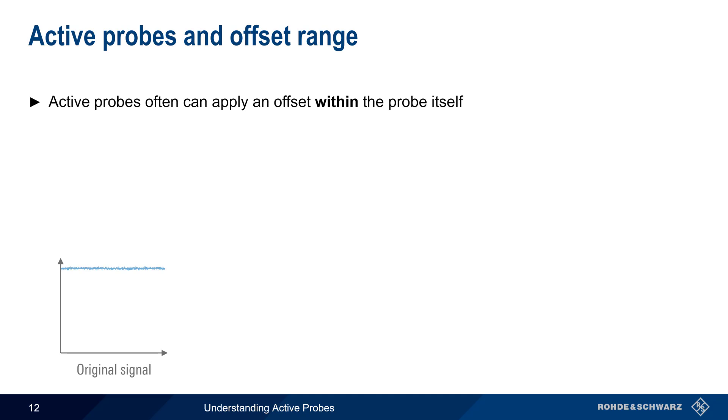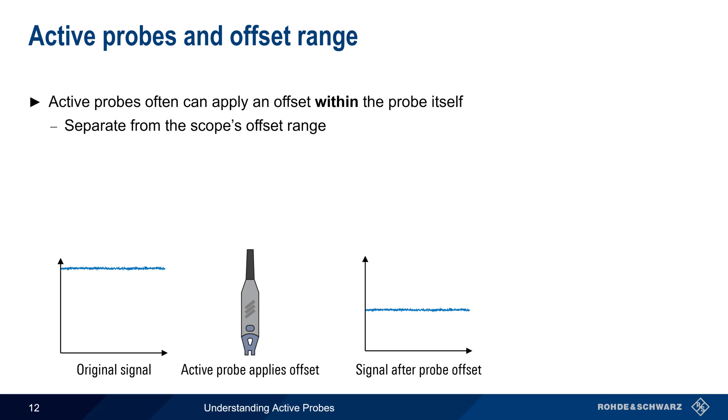Many active probes have the ability to apply an offset within the probe itself. This offset is separate from, or in addition to, the offset range in the scope, and is also independent of the scope's volts per division setting. This means that probe offset can be used to vertically center the signal in the case where scope offset is not sufficient.